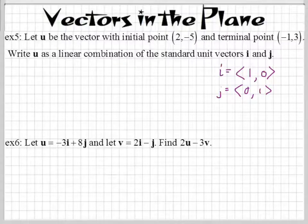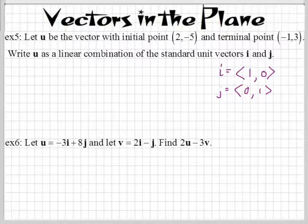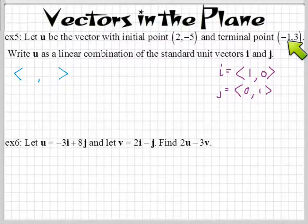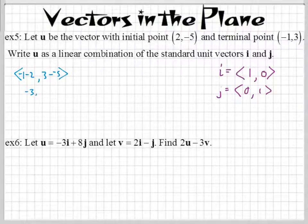So how are we going to write this vector from these two points as a linear combination? The x's, we've got to subtract for our first number. So we subtract the terminal then the initial: negative 1 minus 2. Terminal is always first because that's the second point. And then it's 3 minus negative 5. So we have negative 3 and then we get 8.